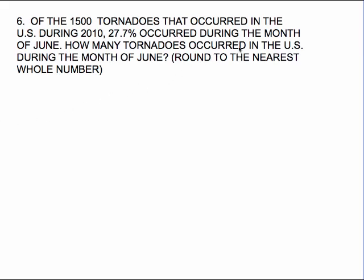These next couple word problems deal with percent, and the first two are very easy — pretty straightforward. It says of the 1,500 tornadoes that occurred in the U.S. during 2010, 27.7% occurred during the month of June.